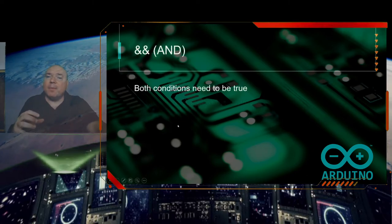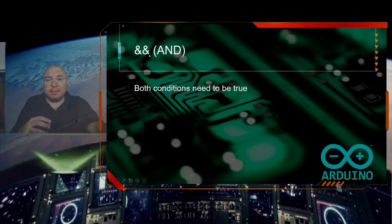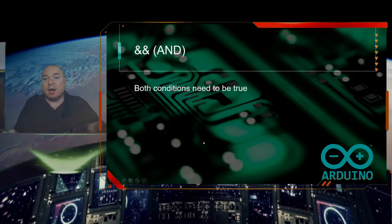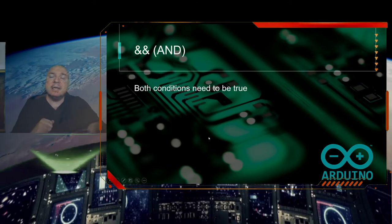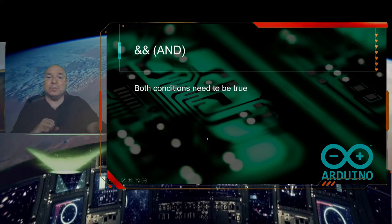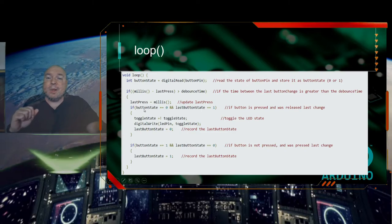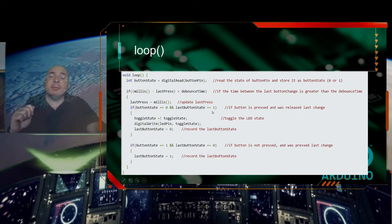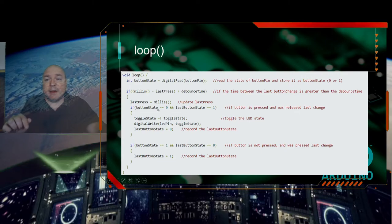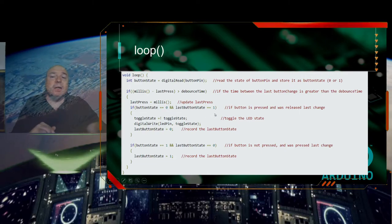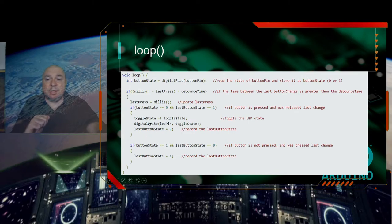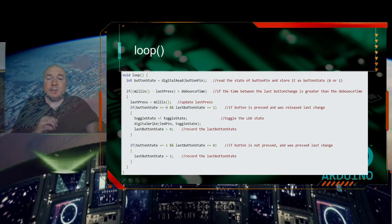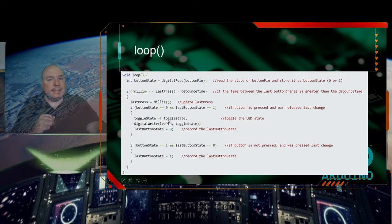The ampersand-ampersand means AND — both conditions must be true for the whole conditional to be true. So in our code, we test if button state equals zero AND last button state equals one. We're comparing button state with zero and last button state with one. If both are true, we execute this code; if either is false, we skip it entirely.